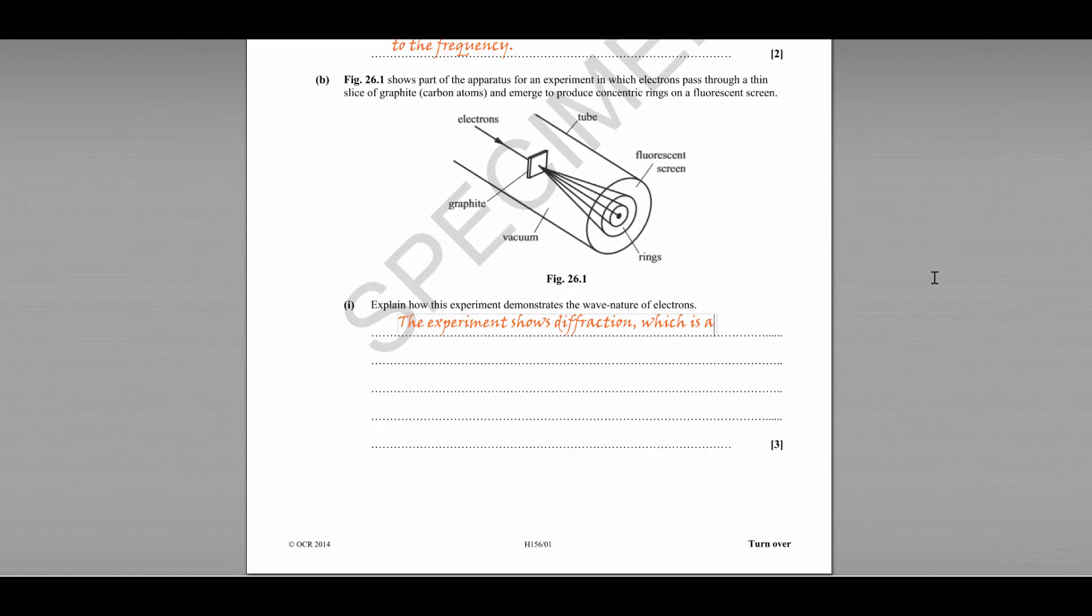Only waves can be diffracted. The electrons are diffracted by the gaps between the carbon atoms.